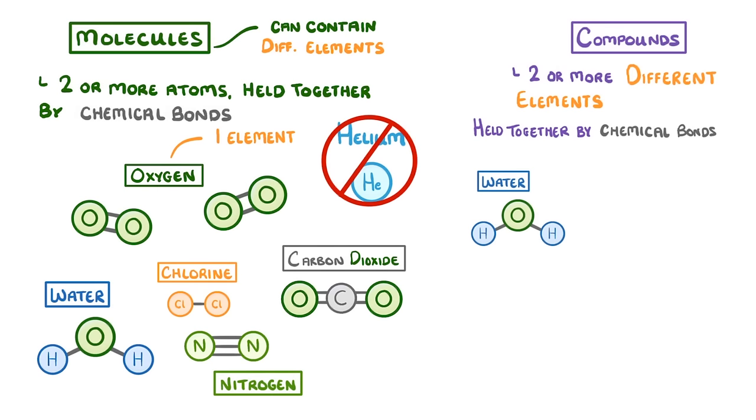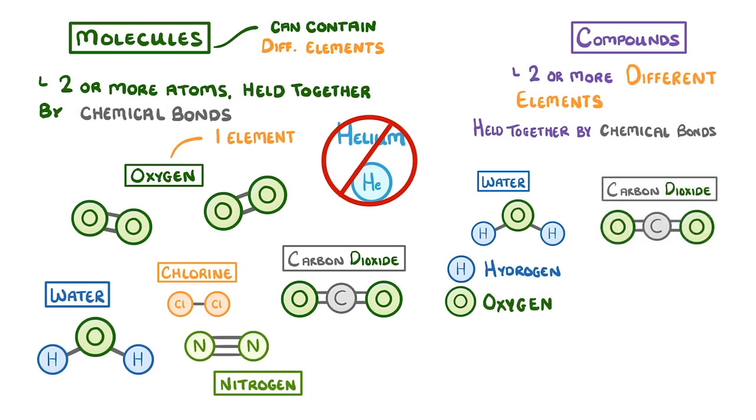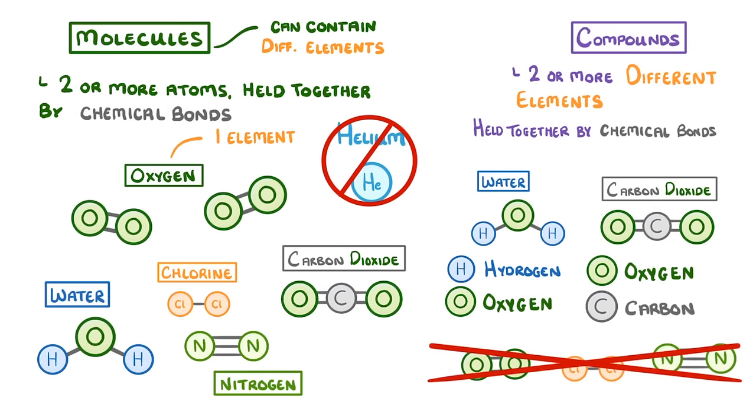For example, water would be a compound because it contains the elements hydrogen and oxygen. And carbon dioxide would be a compound because it contains the elements oxygen and carbon. However, molecules like oxygen, chlorine, and nitrogen aren't compounds because they only contain one type of element.